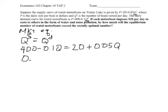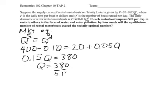0.15Q is equal to 380. 0.15Q is equal to 380 divided by 0.15. Most of us will need a calculator for this. This quantity then is 2,533.33.